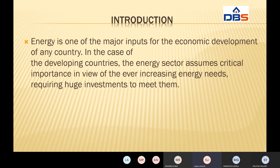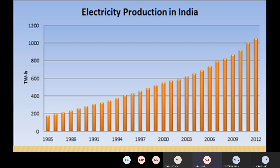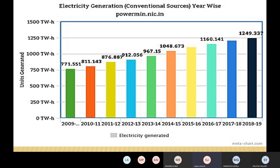Basically, energy will be classified into several types. Based on electricity production in India — in general, from 1985 onwards, how much electricity will be produced in India — the graph covers from 1985 to 2012. Next, how much energy generation is due to conventional sources, how much electricity will be generated from conventional sources.